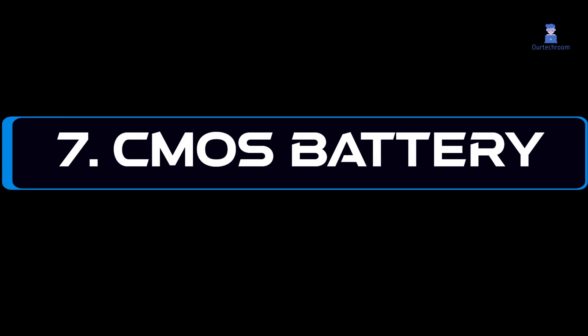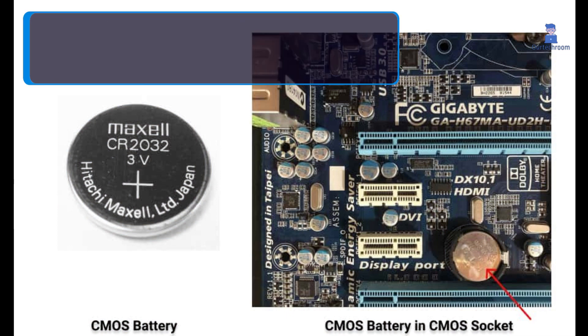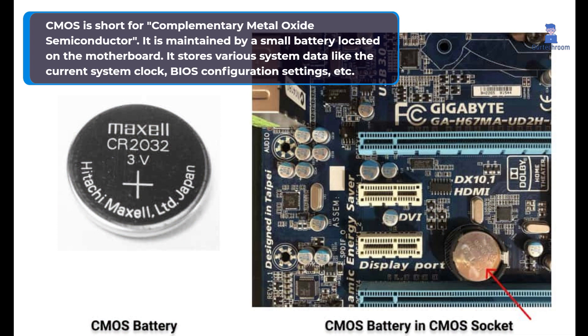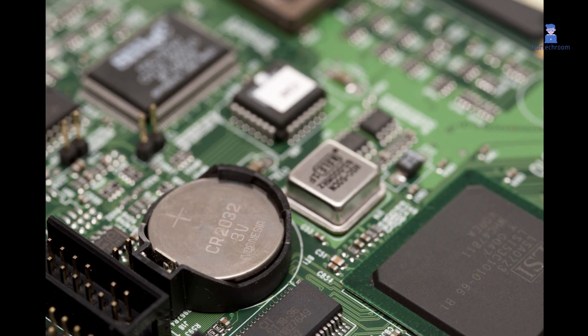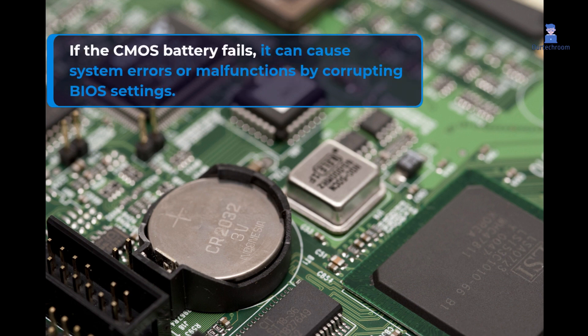7. CMOS Battery. CMOS is short for Complementary Metal Oxide Semiconductor. It is maintained by a small battery located on the motherboard. It stores various system data like the current system clock, BIOS configuration settings, etc. If the CMOS battery fails, it can cause system errors or malfunctions by corrupting BIOS settings.